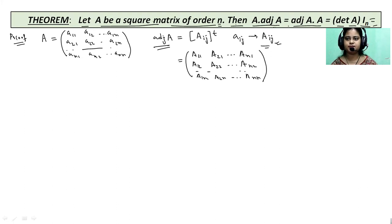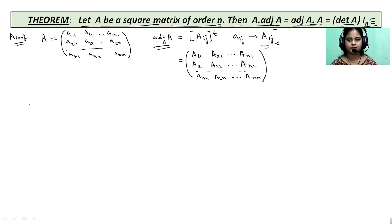Now the theorem says that A into adjoint of A equals adjoint of A into A equals determinant of A into I_n. We need to prove this. Start with A into adjoint of A.